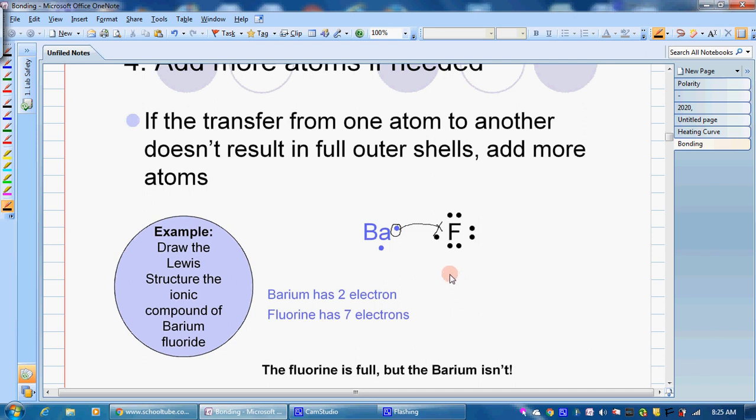So what has to happen here is there has to be another fluorine available with its 7 valence electrons. Then this fluorine can accept the 2nd electron from barium. So now barium has a positive 2 charge because it lost 2 electrons, and each fluorine has a negative 1 charge. So now if we add our charges up together, plus 2, minus 1, minus 1 equals 0.